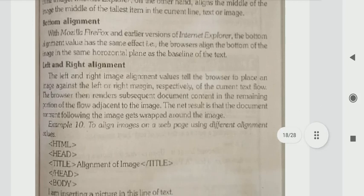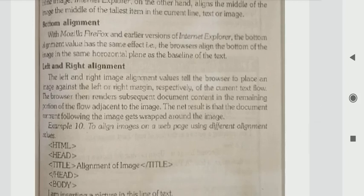Left and right alignment - what does it do? The left and right image alignment values tell the browser to place an image against the left or right margin of the current text flow. The browser then renders the subsequent document content in the remaining portion of the flow, adjusting to the image.